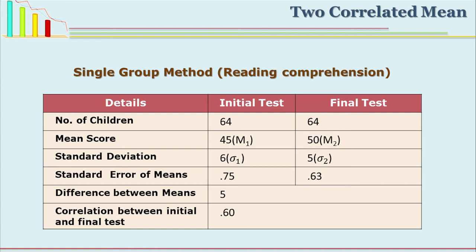There is a difference in the mean of 5, raised from 45 to 50. Now if you find out the correlation between these two sets of 64 scores for the final test and 64 scores for the initial test, the correlation is 0.60. We have to find out whether this score gain of 5 from pre-test to post-test is significant or not. Just seeing a difference of 5 is not enough; we have to find out whether this difference is significant. For that we must first find the SE of difference — the standard error of difference between two means.